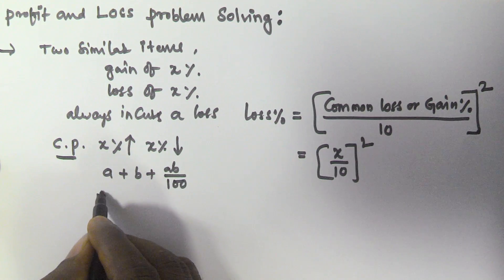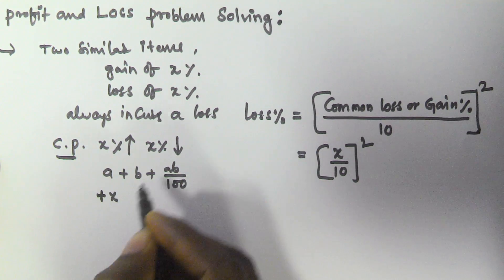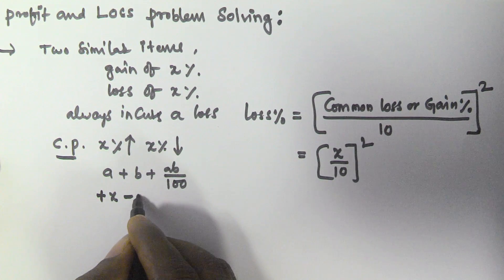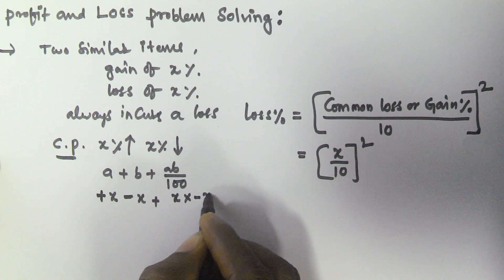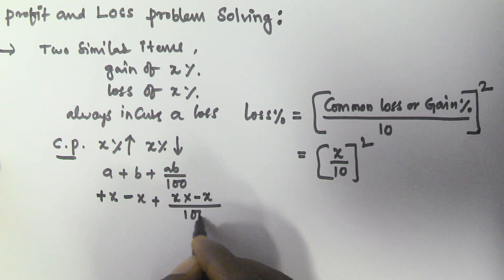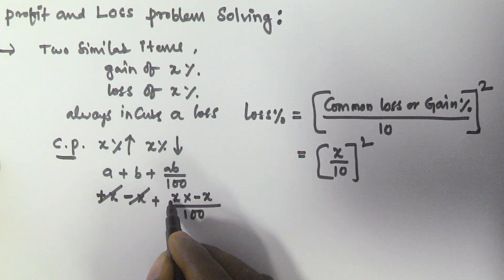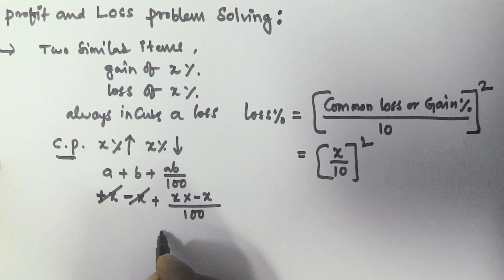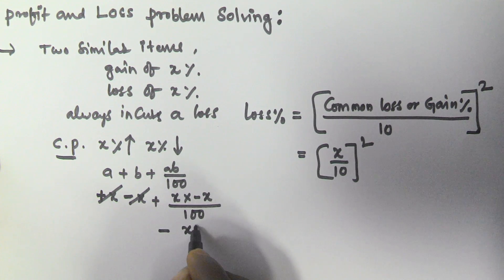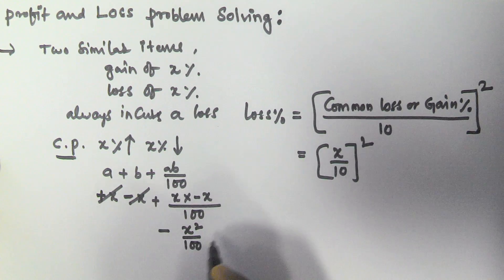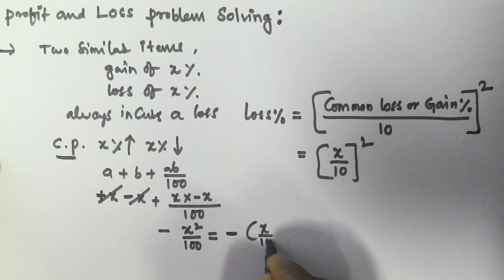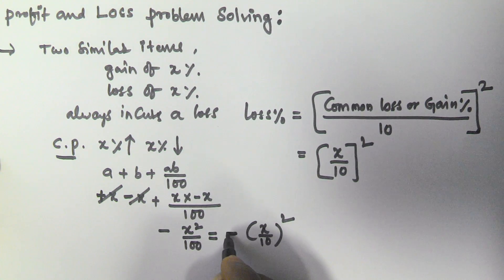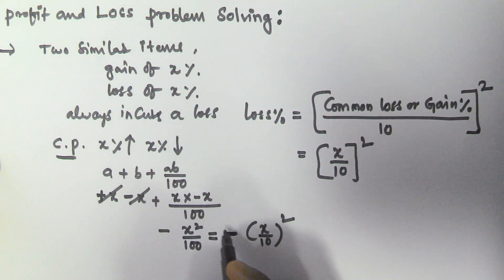Here the gain is +x and the loss is −x. So substituting: (+x) + (−x) + (x × −x)/100. The +x and −x cancel out, leaving x × (−x) / 100, which equals −x²/100. This can also be written as −(x/10)². The minus sign represents a loss, which is why the seller always incurs a loss.